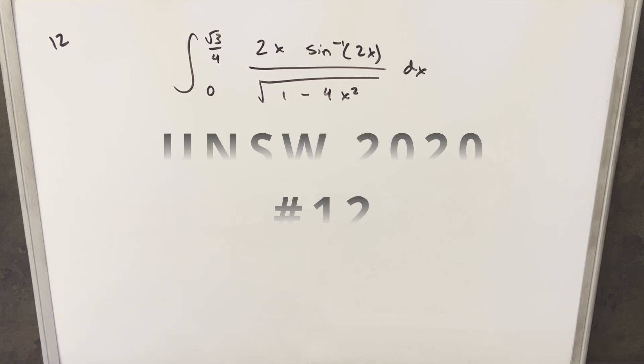Okay, we have here another interesting integral from the UNSW integration B 2020. This one's problem 12. We have the integral from 0 to square root of 3 over 4, 2x arc sine 2x over square root of 1 minus 4x squared dx.